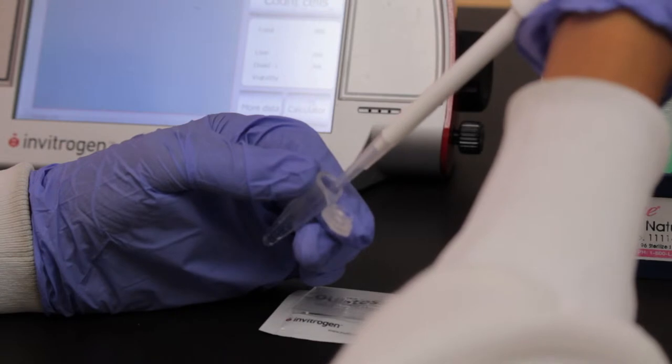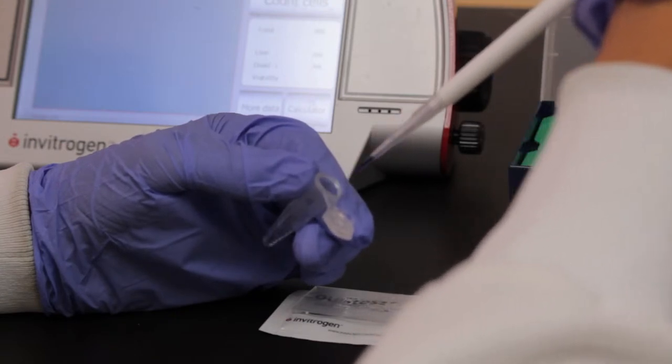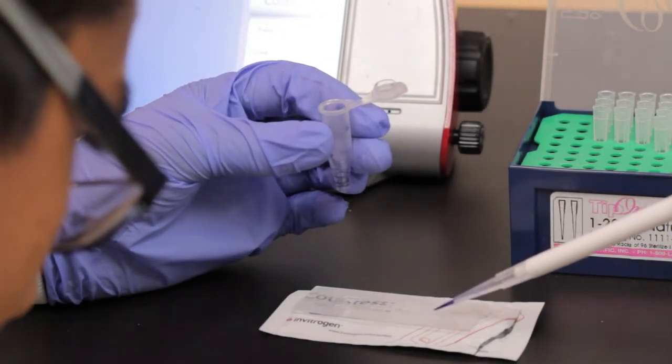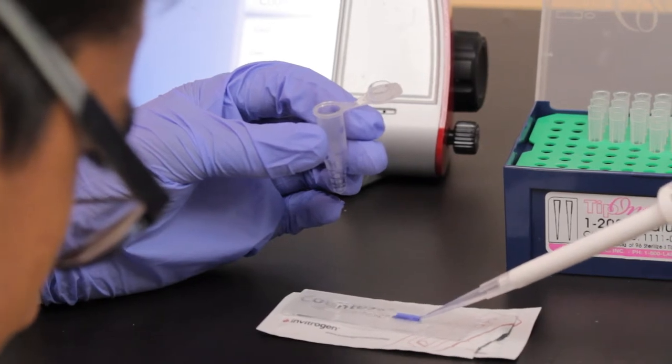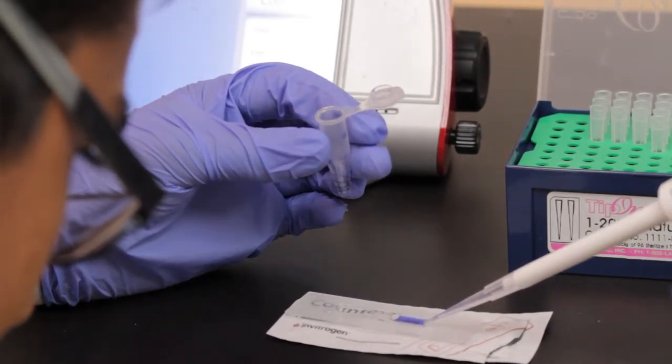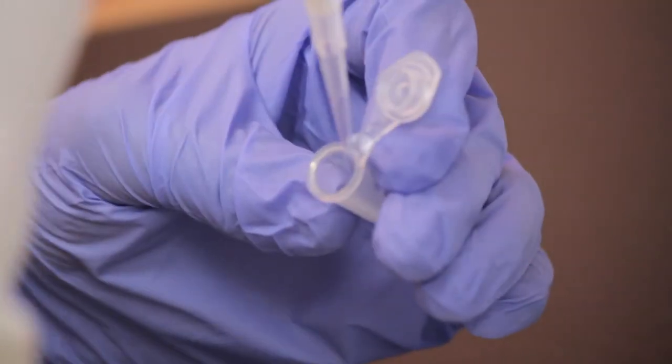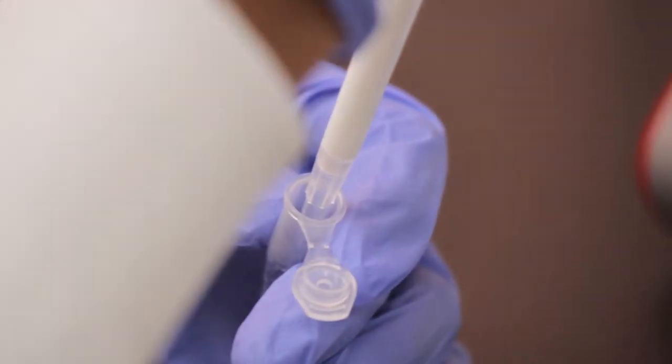Now I take 10 microliters of the cells and place it on the slide. I'll do the same for the other slide - take 10 microliters of cells and place them on the slide.